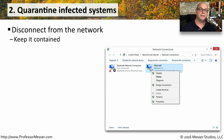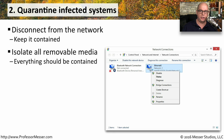If you believe a system has been infected with malware, you should quarantine it immediately. You should disconnect it from the network so it can't communicate with anybody else inside your organization. You should also make sure that any removable media connected to the system stays quarantined as well — you don't want a USB drive plugged into another computer and spreading the malware to that system.